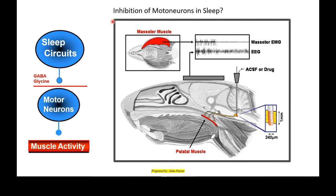Can we show evidence for inhibition? Yes — we have a masseter EMG and we are able to put in a drug to demonstrate that this EMG activity can be depressed by preventing its excitation through inhibition.